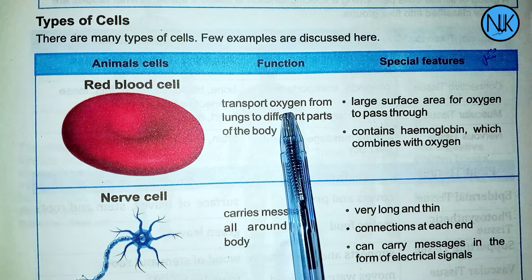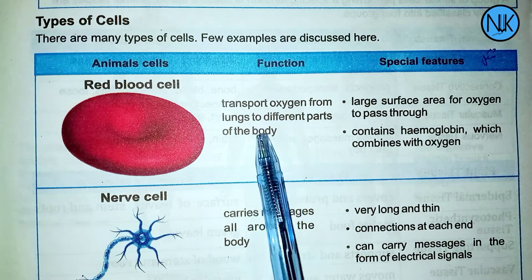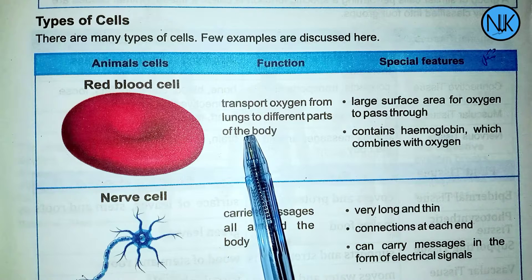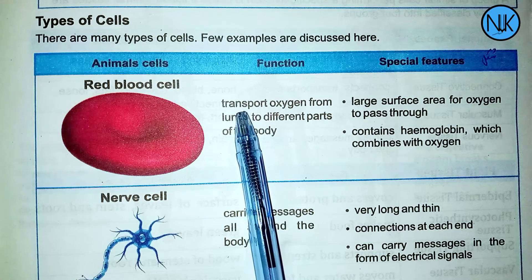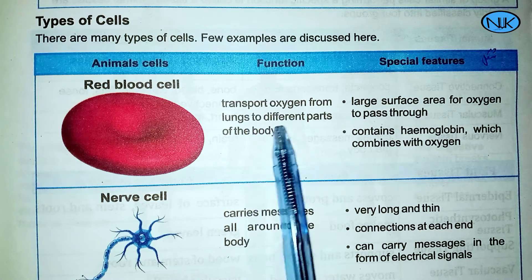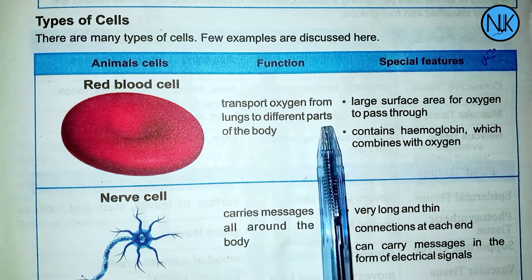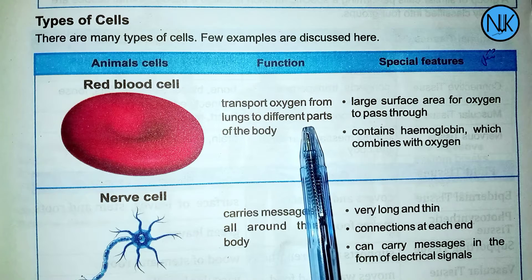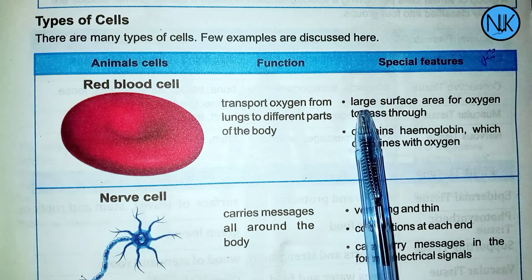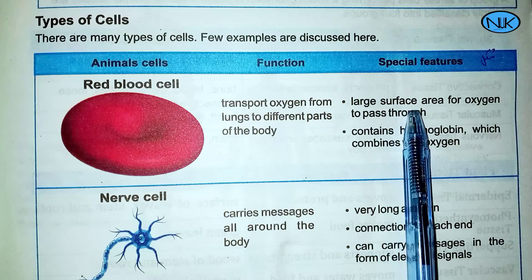Red blood cells transport oxygen from the lungs to different parts of the body. This is the function of RBC — carrying oxygenated blood from the lungs throughout the body.